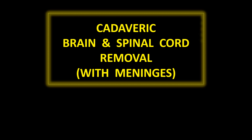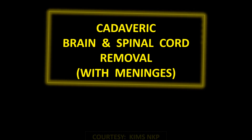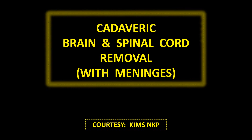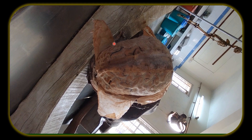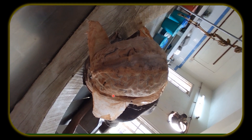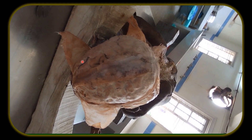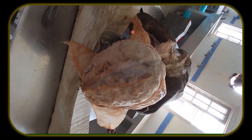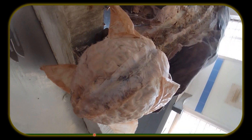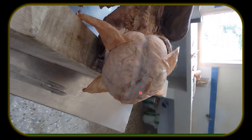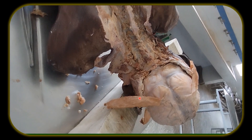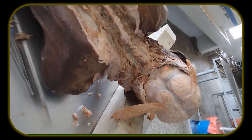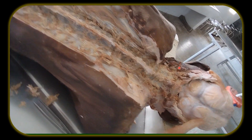Welcome to my demonstration video. We are going to see removal of brain and spinal cord from the cadaver. The cranial vault has been removed after breaking the skull along the margins of the scalp. Here are the dura mater flaps, cut and reflected. Here is the brain surrounded by arachnoid matter and pia matter. On the back side of the skull, the occipital bone has been removed.